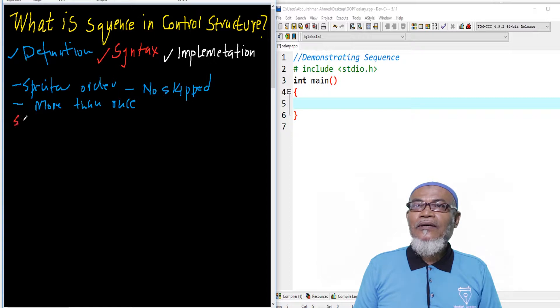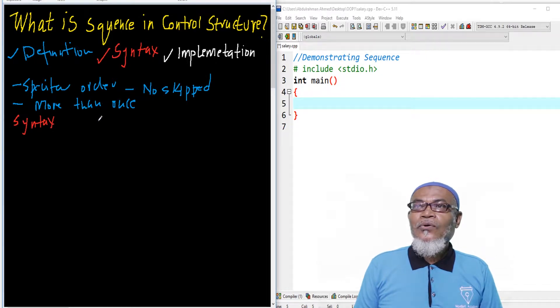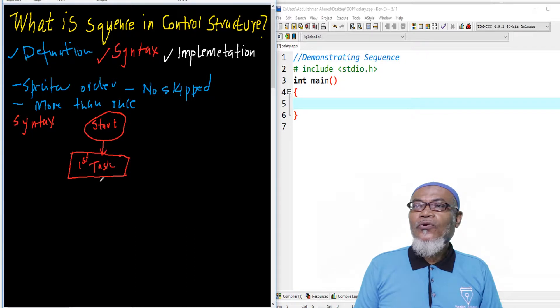So that takes us to the syntax. To understand our syntax, we have to take up an algorithm. So all sequences must have a start point, and into that particular statement, then we go to the first task. And then from the first task, we move on to the second task.